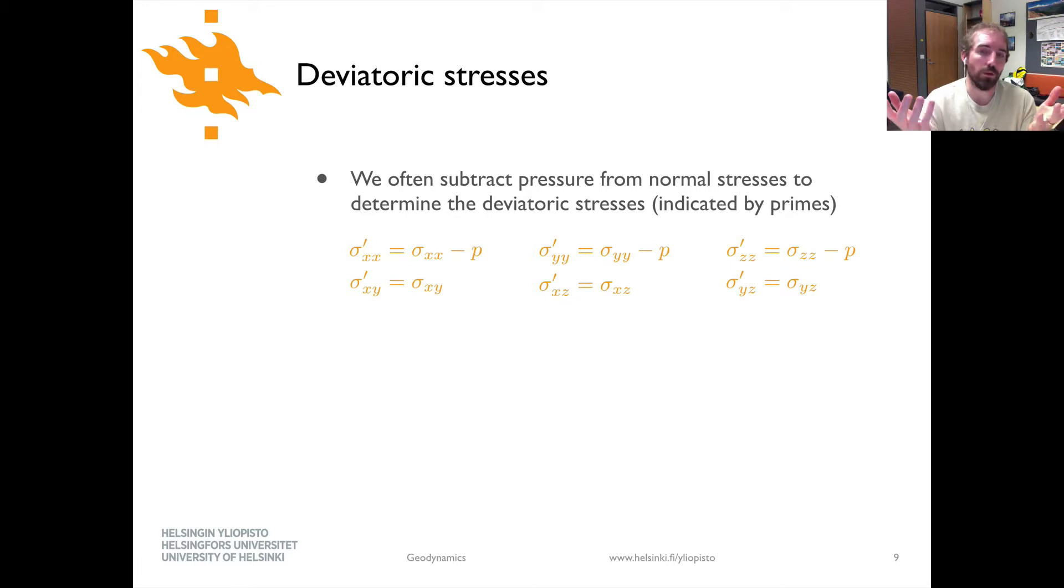Often times you'll see deviatoric stress indicated with a sigma prime xx, sigma prime yy. That tells you that you have already subtracted the pressure from the three normal stresses. What you can also notice here is that there's no change to the shear stresses. This is something that's only going to modify the normal stresses.